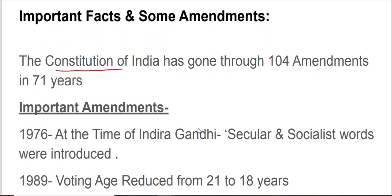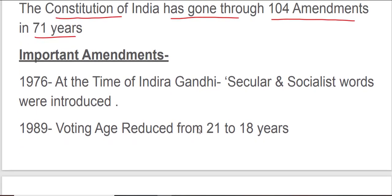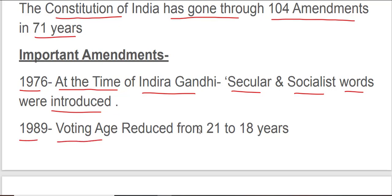The Constitution of India has gone through 104 amendments in 71 years. Some important amendments: in 1976, at the time of Indira Gandhi, the words 'secular' and 'socialist' were introduced into the Constitution. In 1989, the voting age was reduced from 21 to 18 years.